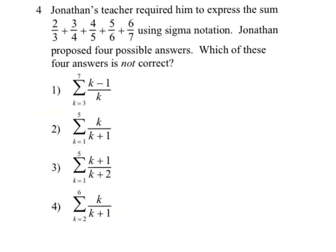Our third example is another typical Regents question. It says Jonathan's teacher required him to express the sum of five terms using sigma notation. Jonathan proposed four possible answers, and the question asks which one is not correct. We want to emphasize here that there are multiple ways to represent a series in sigma notation, and it all hinges on your starting value — the starting value has a huge impact on what the nth term expression looks like.